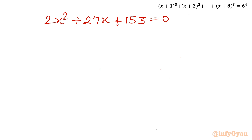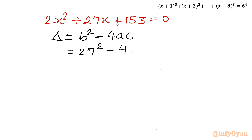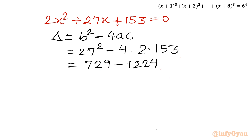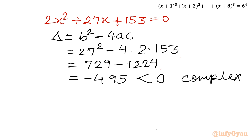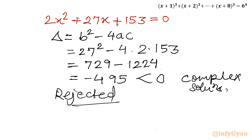Checking the discriminant: Δ = b² − 4ac = 27² − 4·2·153 = 729 − 1224 = −495. Since the discriminant is negative, the quadratic yields only complex solutions, which we reject as we are looking for real solutions. So x = 0 is the only accepted answer.